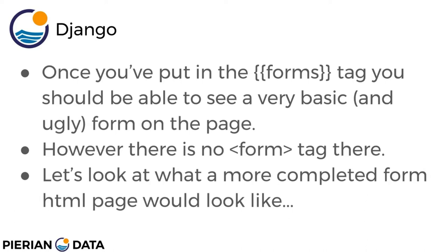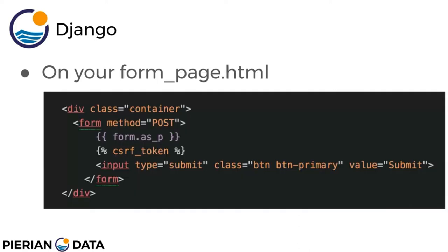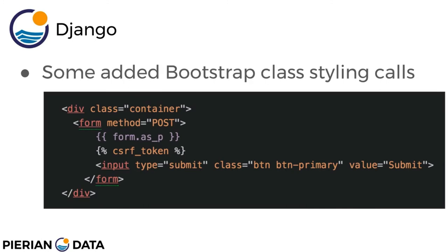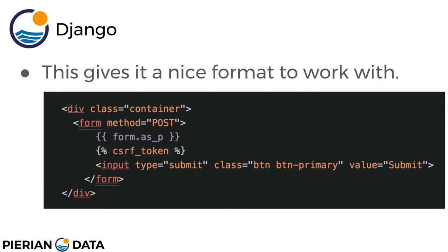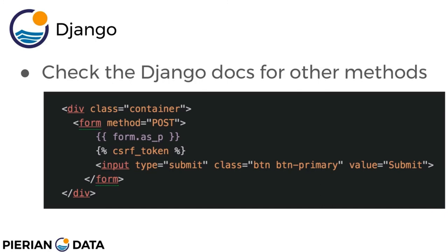Once you've put in the forms template tag, you should see a very basic and honestly ugly-looking form on the page. However, you won't actually have an HTML form tag there. A more completed form HTML page would include some Bootstrap class styling, and you'd call form.as_p which uses paragraph tags, giving you a nicer layout — items go top to bottom instead of left to right. You can also check the Django docs for other methods, like rendering the form as a table.